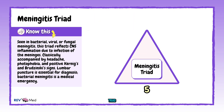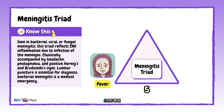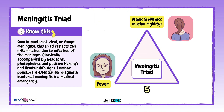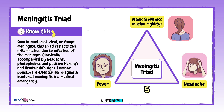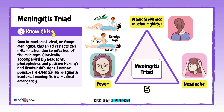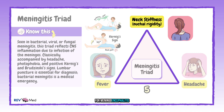Number five: meningitis triad — the classic signs of meningitis: fever, a stiff neck, and headache with photophobia. Also, don't forget to check for Kernig's and Brudzinski signs. A lumbar puncture can confirm the diagnosis. You can add altered mental status and seizures for meningoencephalitis.